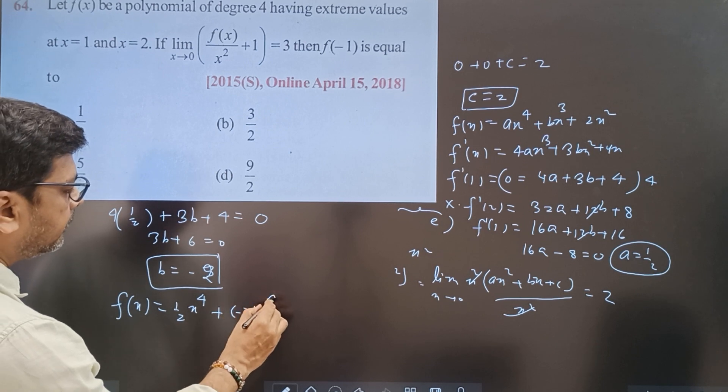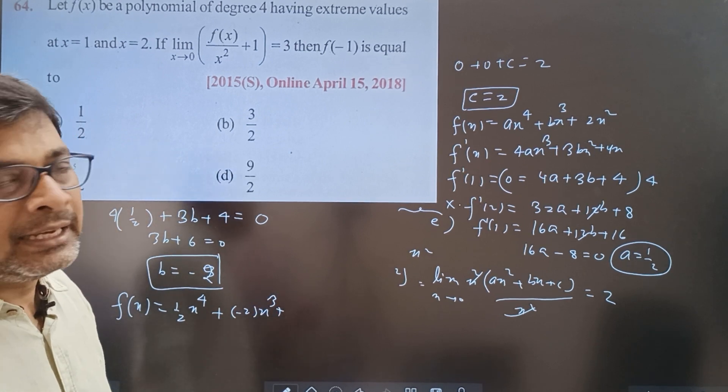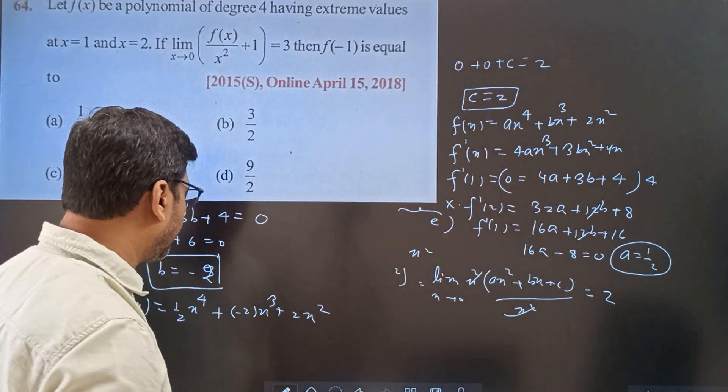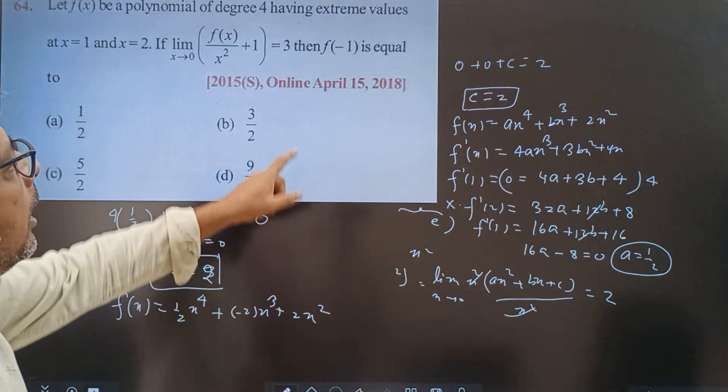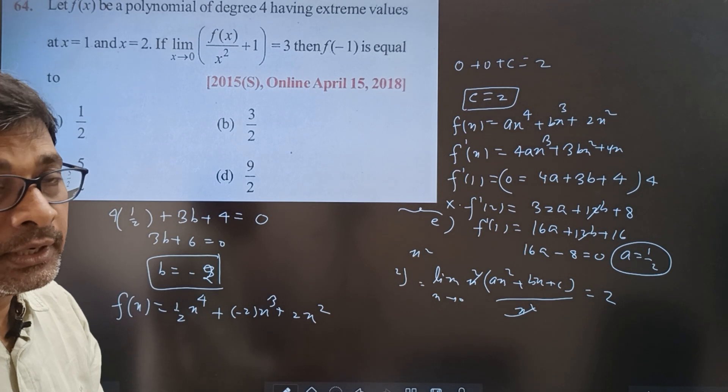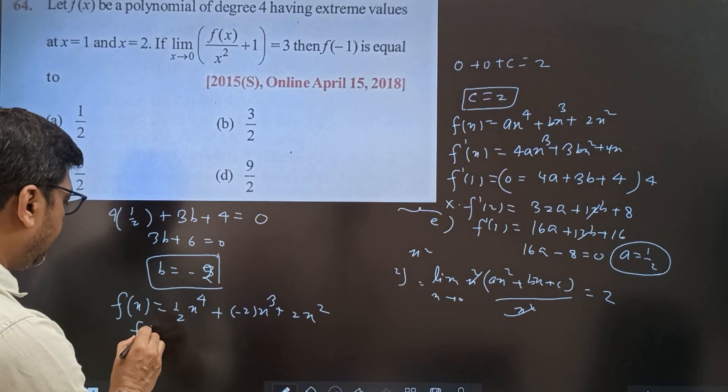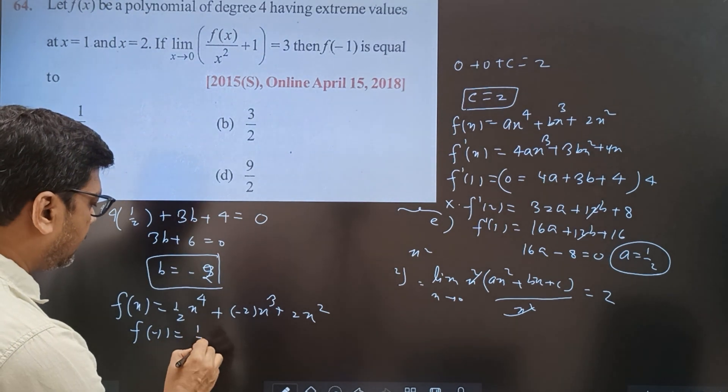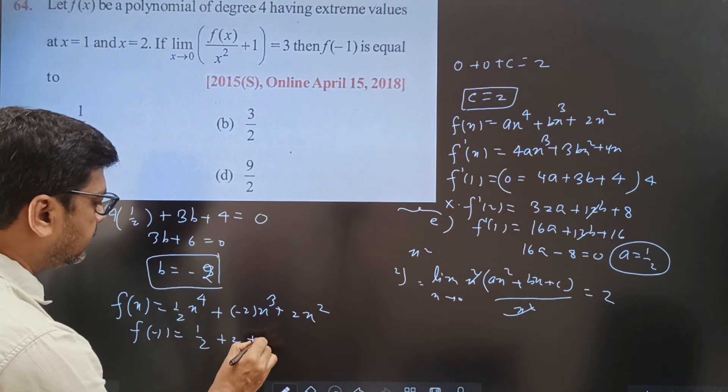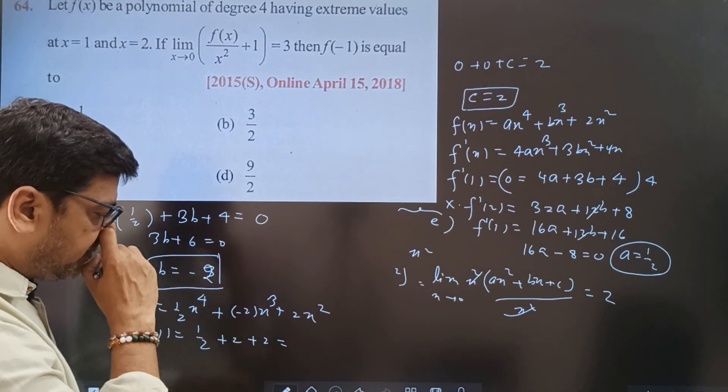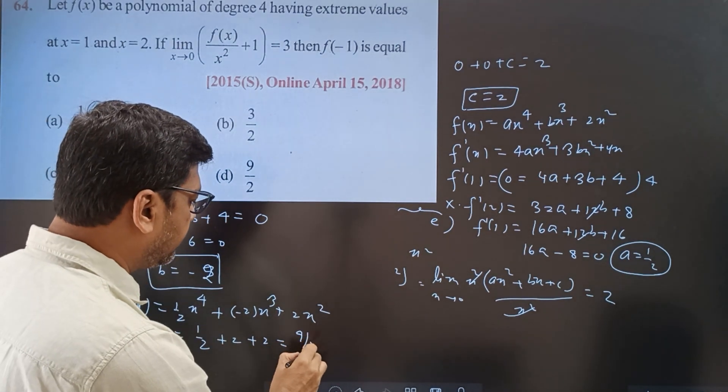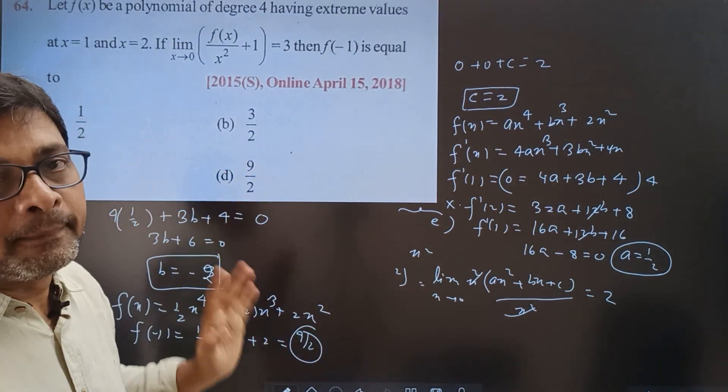So f(x) = (1/2)x⁴ - 2x³ + 2x². You have to find f(-1). Put -1 and you will get the answer. It will be 1/2 plus 2 plus 2, which is 9/2.